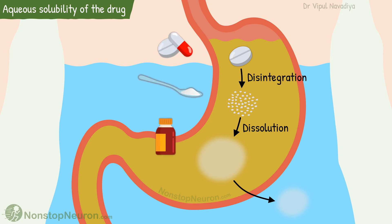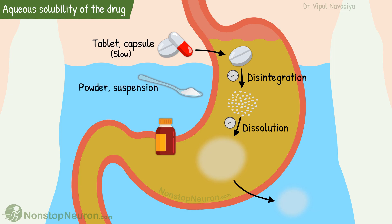Different formulations start from different steps in this process and therefore have different rates of absorption. In tablets and capsules, the drugs are in solid form — they have to go through both disintegration and dissolution in our body, which takes time, so absorption from them is slow. In powders and suspensions, the drug is already in the form of fine particles; they don't need to disintegrate further and can directly undergo dissolution, so absorption is relatively faster. Finally, in solutions, the drug is already dissolved, so it's ready to get absorbed right from the beginning, showing the fastest absorption among all these. Thus, the faster the drug gets dissolved, the faster the absorption.